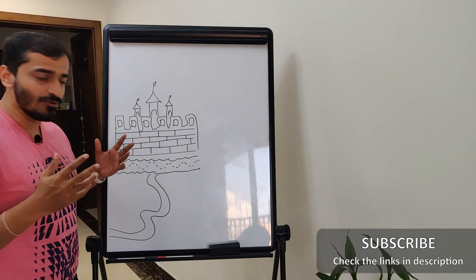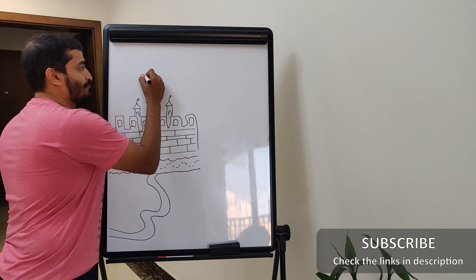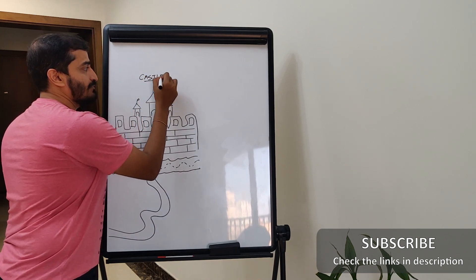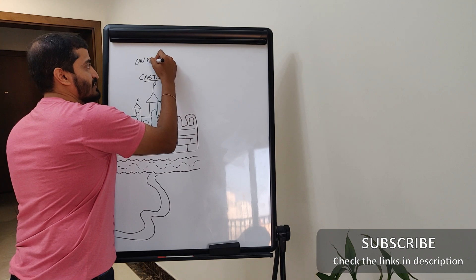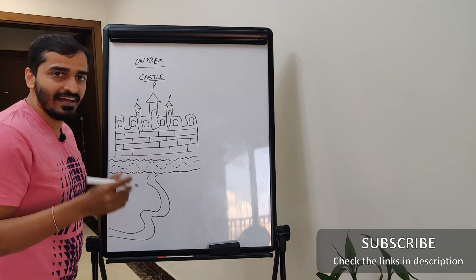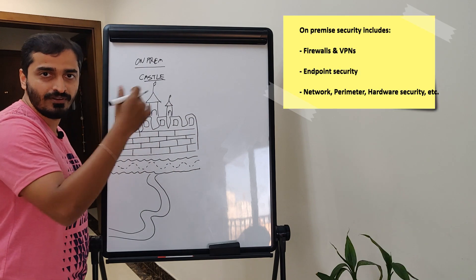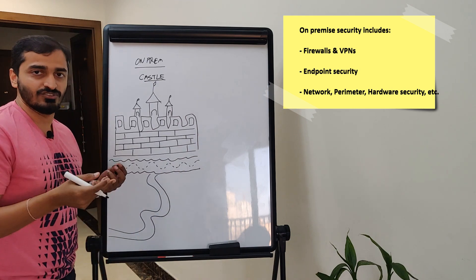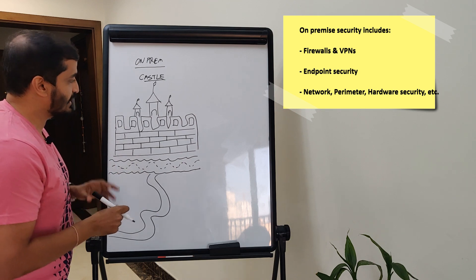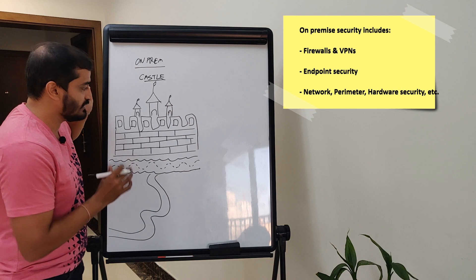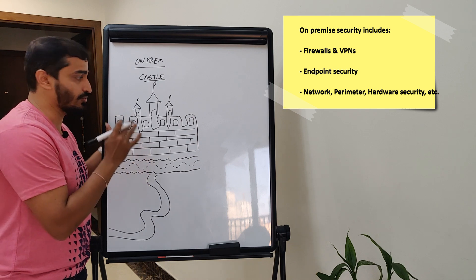What you see here is essentially a castle — I hope it looks like one! We want to relate this to an on-premise environment. Let's consider this as on-premise, because until we understand how security was looked at in the past with on-premise, we can't look at it from the perspective of how it will look in the future — essentially cloud. So this is your on-premise setup: your castle, where your server sits, where you host your environment, your applications.